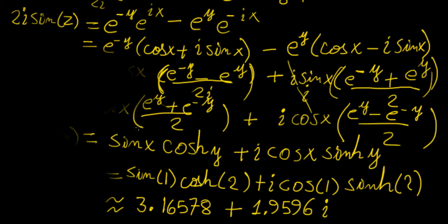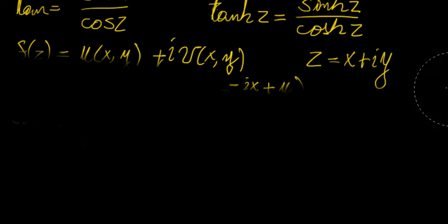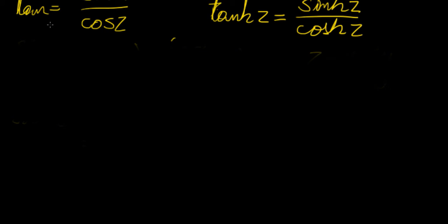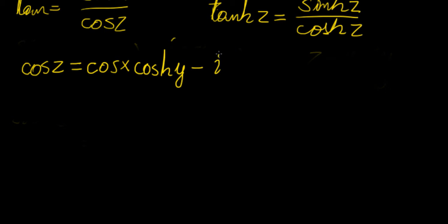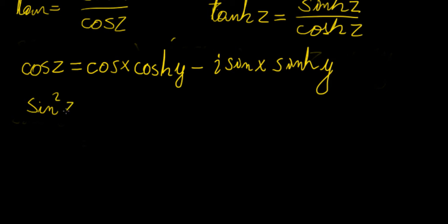Using the same procedure for the cosine function of a complex variable, we get: cos(z) = cos(x)·cosh(y) − i·sin(x)·sinh(y). You can derive that using the same method; it's rather long but not hard, and it's not difficult to prove that the identity sin²(z) + cos²(z) = 1 holds for complex variables as well.